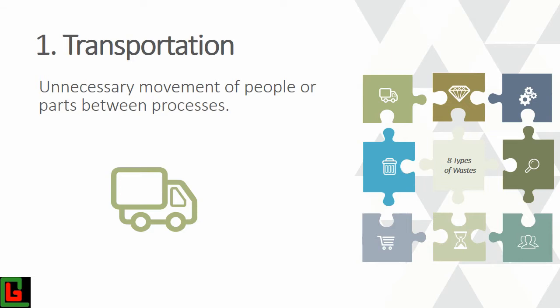The first type of waste is transportation — unnecessary movement of things from one place to another. This includes not only raw material or finished product, but also documentation and information. Anything which moves unnecessarily is a waste, because it wastes time and effort and creates possibilities of damage or missing items.